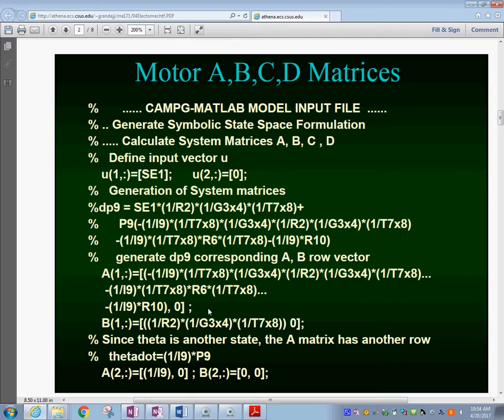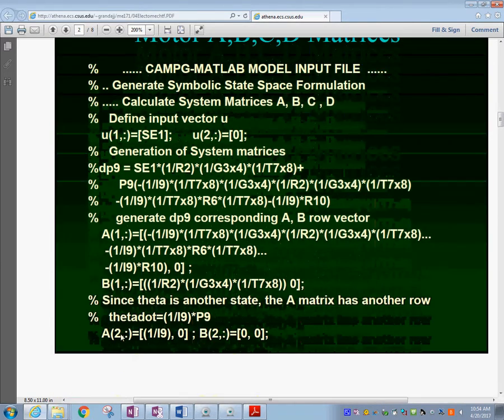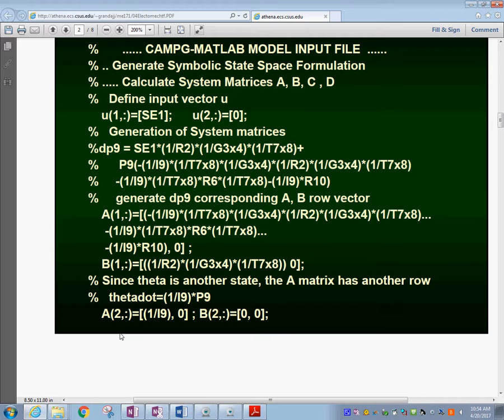That equation also has components for the input bu. The input is over here right there. Remember Ax plus bu, so we have A and B in here.